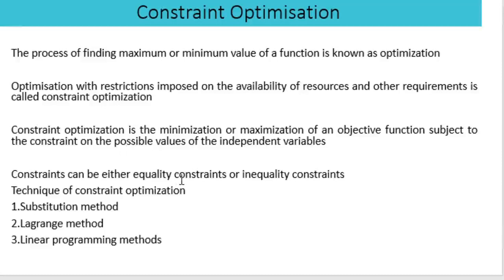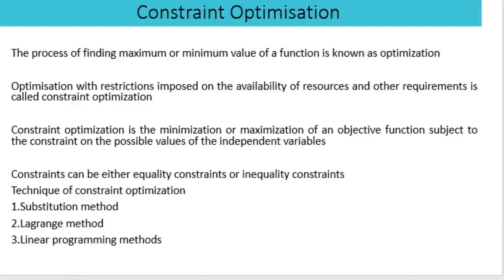Constraints can be either equality constraints or inequality constraints. The techniques of constraint optimization include the substitution method, the Lagrangian method, and the linear programming method. These are the important methods used for finding the constraint optimization.